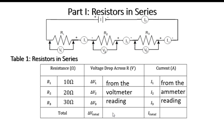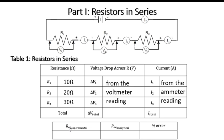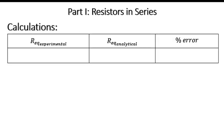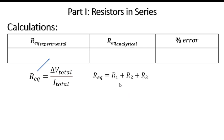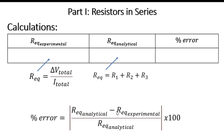Once you have the data for the total voltage and total current in the series connection, you can get the equivalent resistance experimental value and the equivalent resistance analytical value. The equivalent resistance experimental value is the total voltage divided by the total current. The equivalent resistance analytical value for series connection is R1 plus R2 plus R3. The percentage error is the difference of the analytical and experimental values divided by the analytical value, times 100.